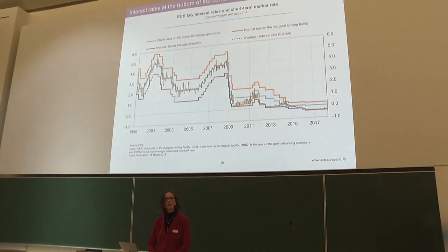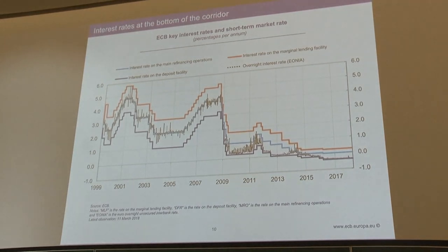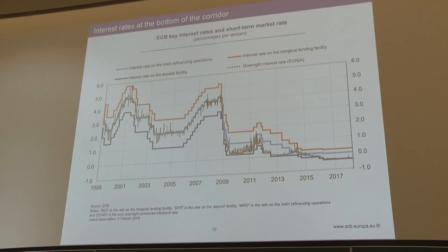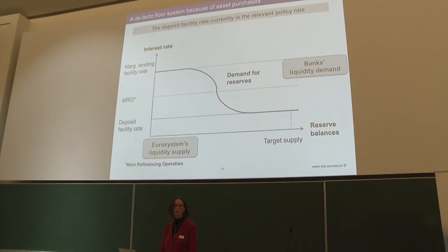This chart shows how interest rates evolved over time. The corridor is shown by red and blue lines, with the main refinancing operations rate in the middle. The overnight interbank rate EONIA fluctuates around the main refinancing operations rate with some volatility due to weekly operations and end-of-quarter effects. More recently, rates have declined to the bottom of the corridor — no longer around the MRO rate — because the corridor system has effectively evolved into a floor system on account of asset purchases conducted since 2014.